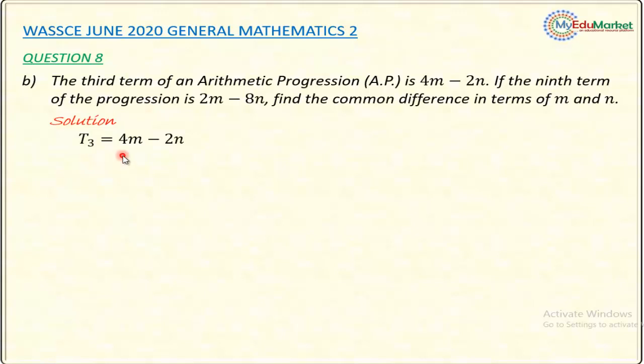So term number 3 is 4M minus 2N, as given in the question.